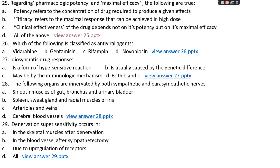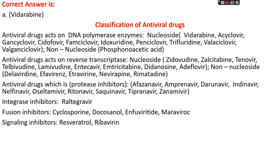Question number twenty-six: which of the following is classified as an antiviral agent? Option A: vidarabine, option B: gentamicin, option C: rifampicin, or option D: novobiocin. The right answer is option A, vidarabine. Antiviral drugs that act on DNA polymerase enzymes include nucleoside analogs such as vidarabine, acyclovir, ganciclovir, cidofovir, famciclovir, idoxuridine, penciclovir, trifluridine, valacyclovir, and valganciclovir, and non-nucleoside groups such as phosphonoacetic acid.